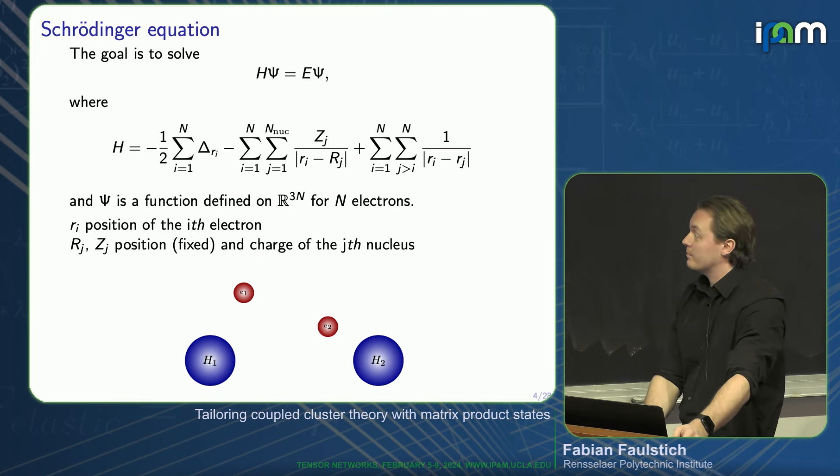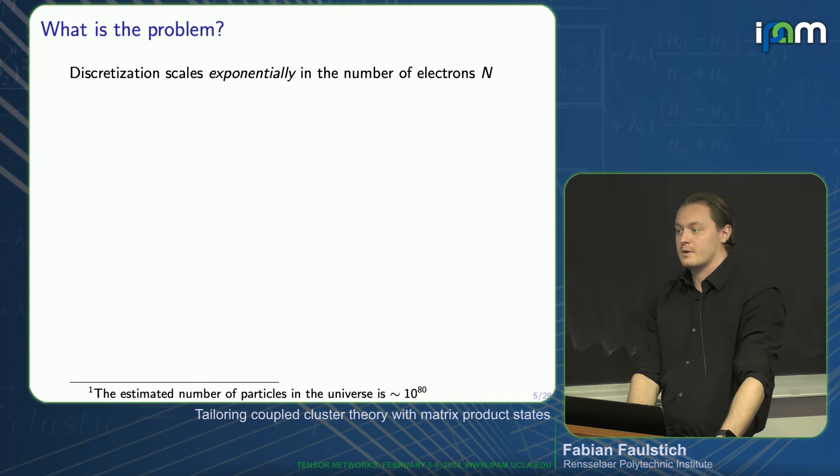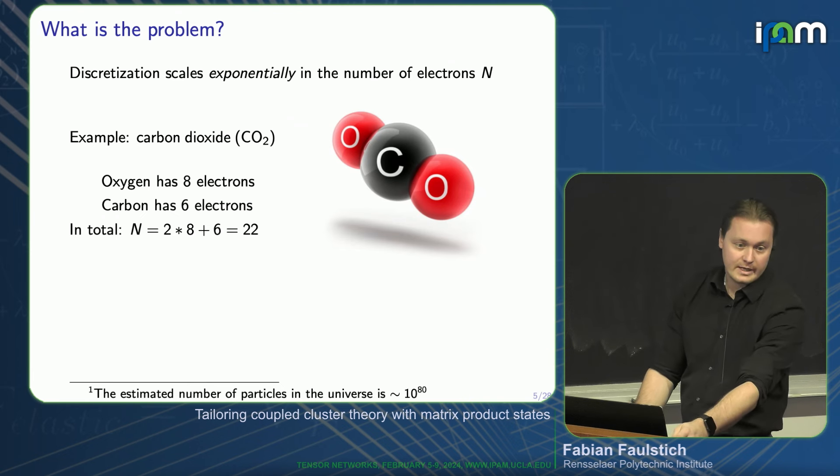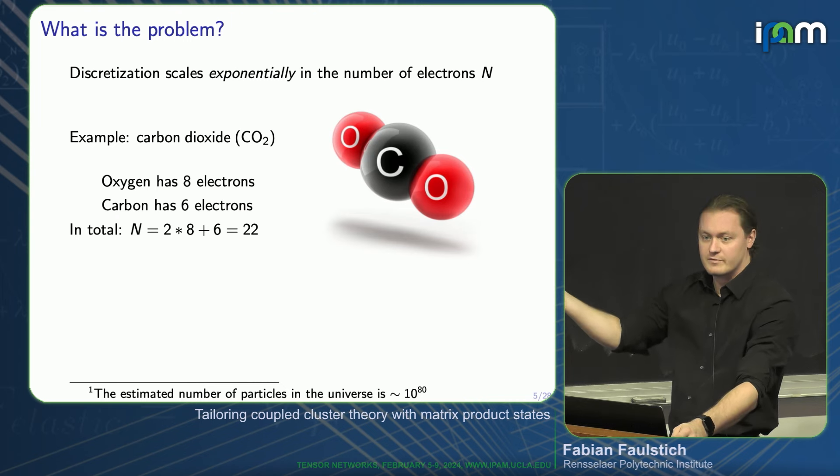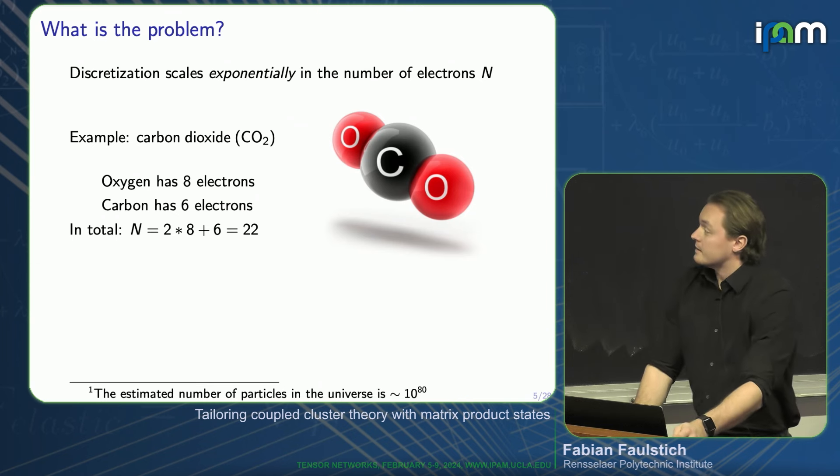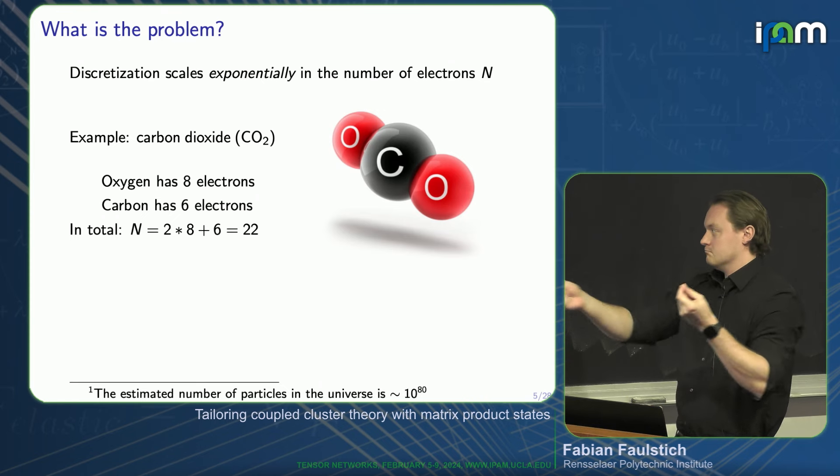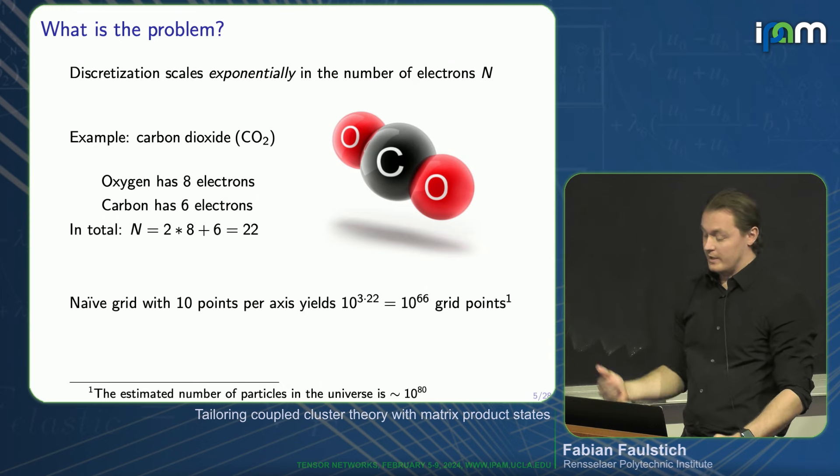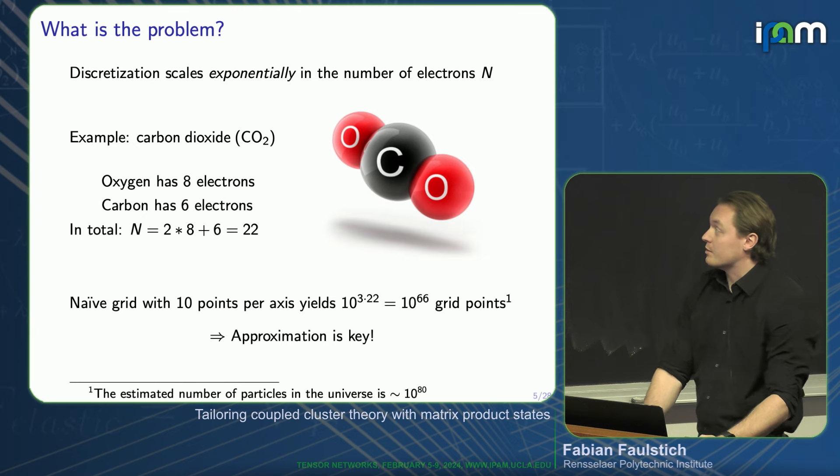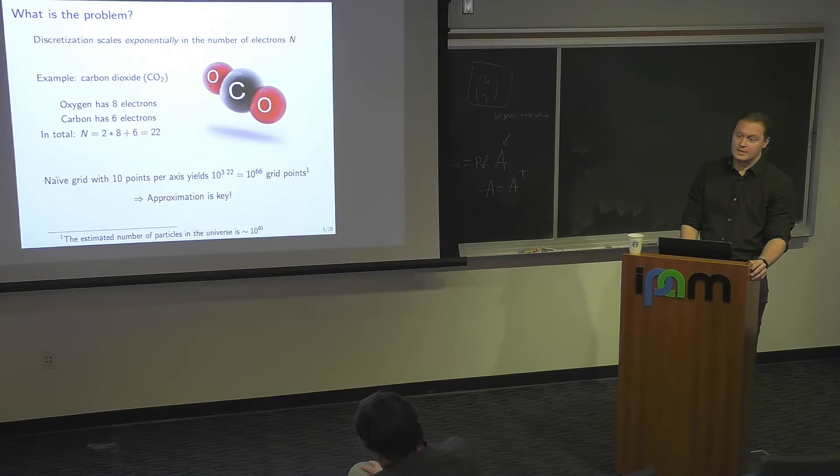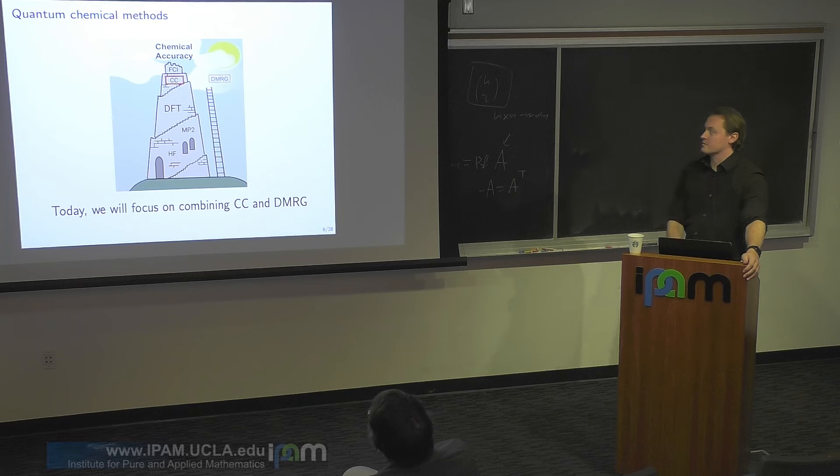Now, you may say, what's the big deal here? We have an eigenvalue problem. Why don't we just discretize it, plug it into MATLAB, and hit solve? Let's do a very quick back-of-the-envelope calculation. Let's use CO2 as an example. It's a very innocent-looking molecule. Oxygen has eight electrons, carbon has six. So that in total gives you 22 electrons. Each electron has three degrees of freedom. So in total, 66 degrees of freedom. If we were to discretize the eigenvector with 10 grid points per axis, you end up with 10 to the 66 grid points just to discretize the eigenvector. This is computationally infeasible.